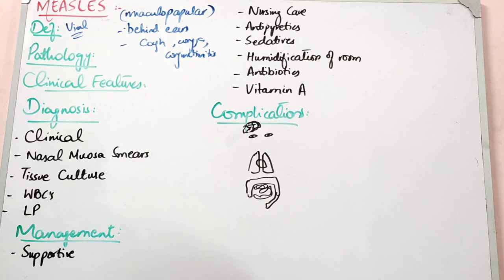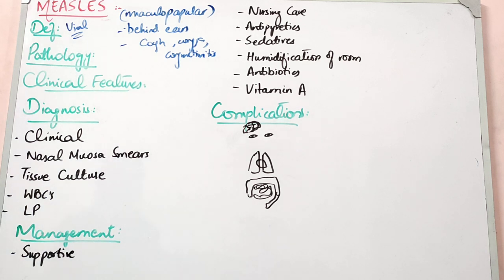Simply put, measles is a viral infection. We use the measles vaccine for every child at 9 months. After some children, there can also be a superseded measles infection from another strain. So the virus basically causes cough, coryza, and conjunctivitis because it involves the respiratory tract.